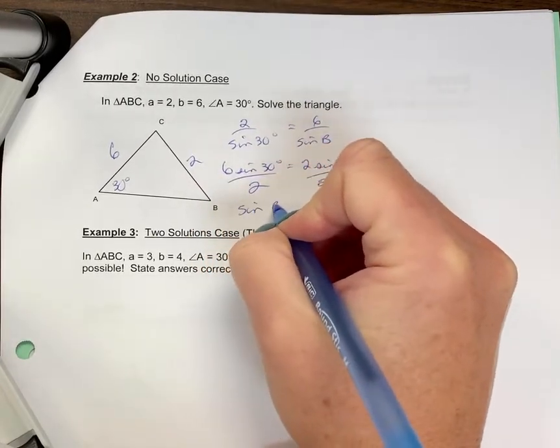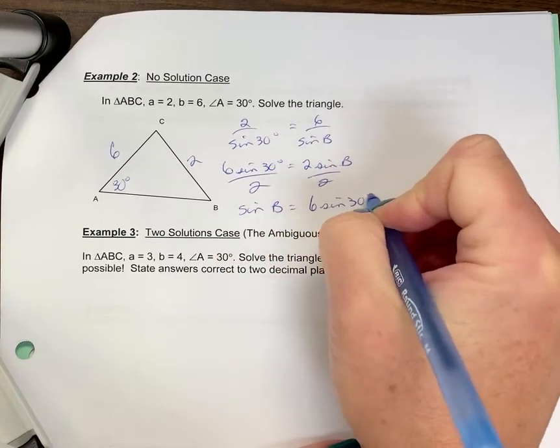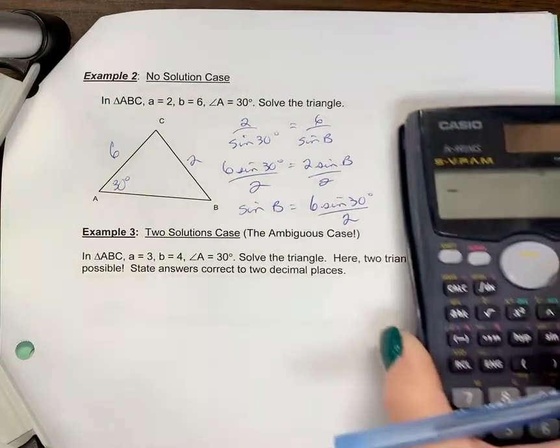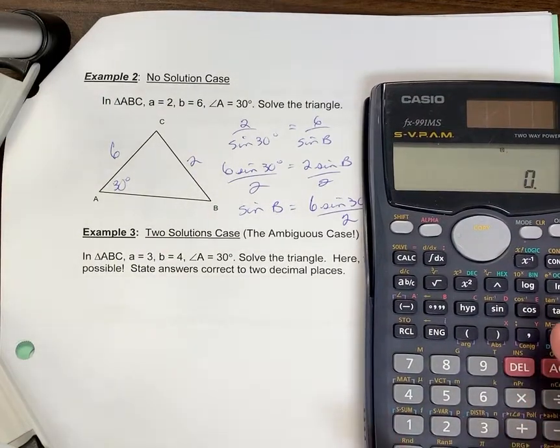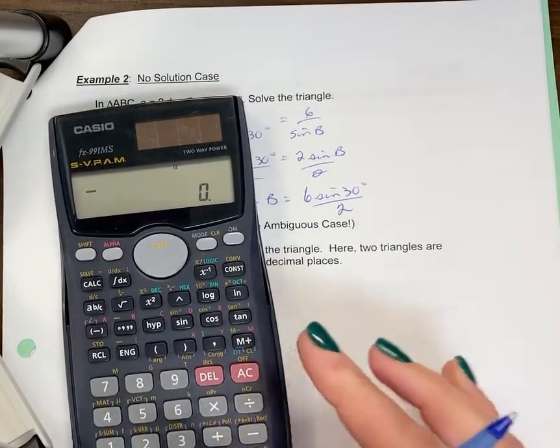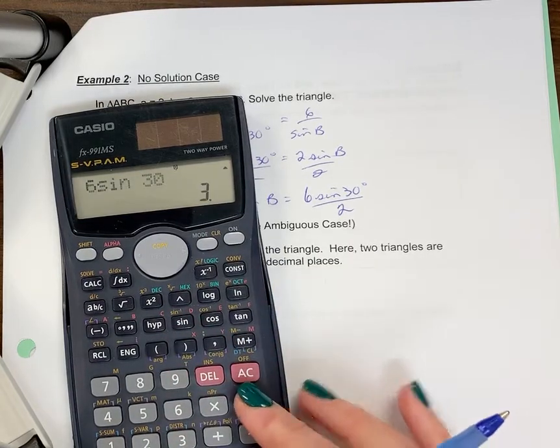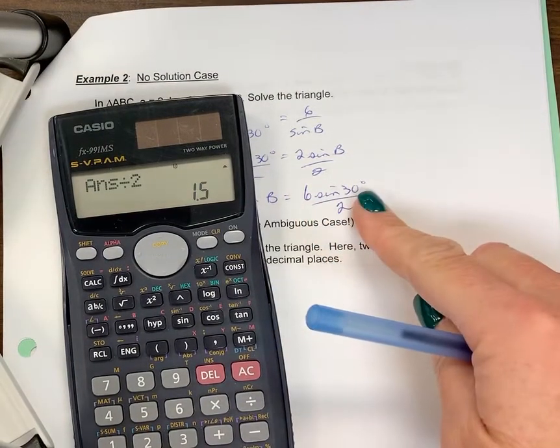And sine B is going to equal 6 sine 30 degrees over 2. So what happens is, when I go to put this in my calculator, I'm going to type in 6 sine 30. I'm just trying to see if we can see it here. I'll do that. 6 sine 30 equals divided by 2. And I get 1.5. What's going to happen now? That's what sine B equals.